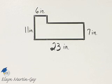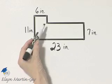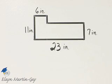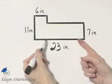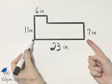Let's find the perimeter and area of this figure, and to find the perimeter we need to find some unknown lengths here. Notice this is given to be 23 inches,